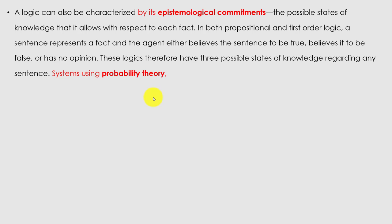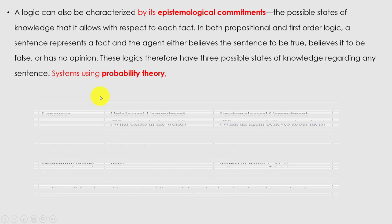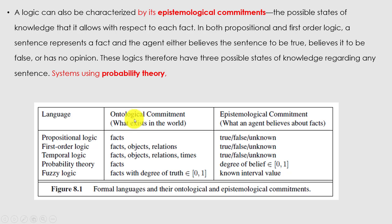A logic can also be characterized by its epistemological commitment — the possible states of knowledge it allows with respect to each fact. In both propositional and first-order logic, a sentence represents a fact and the agent either believes the sentence to be true, believes it to be false, or has no opinion — similar to fuzzy logic. These logics therefore have three possible states of knowledge regarding any sentence.